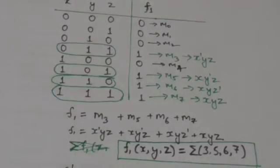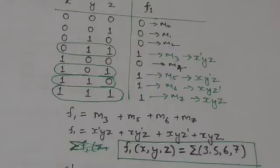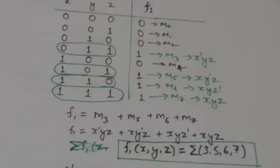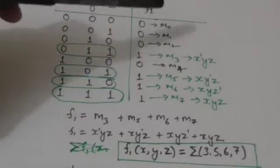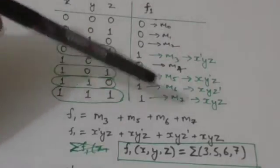To summarize: first find the combination of values of binary variables for which the function gives the output 1, then find the minterms associated with the binary number formed by those variable values, and then combine these minterms using the OR operator.